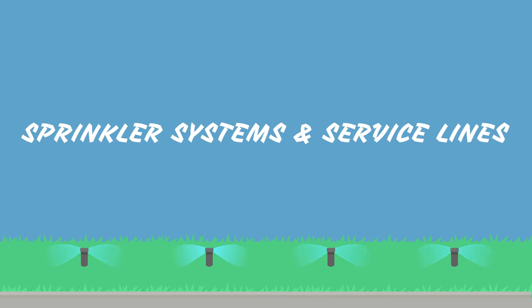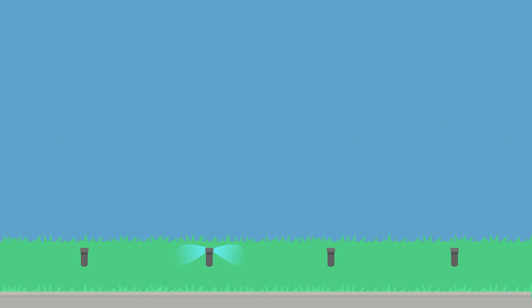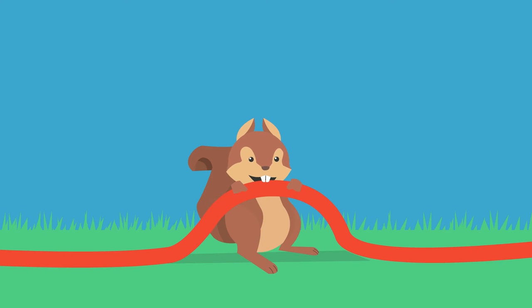Sprinkler systems and service lines can break or leak, resulting in big water bills for the homeowner. Walk through your yard periodically to watch for service line breaks or problems with your sprinkler system. Telltale signs include soggy ground spots or overgrown or extra green areas of lawn. In drip irrigation systems, leaks may occur if animals chew through the line.